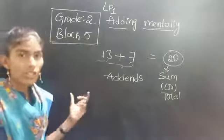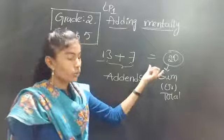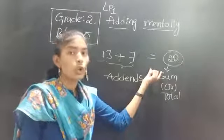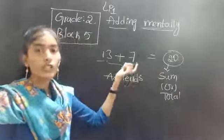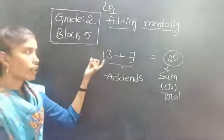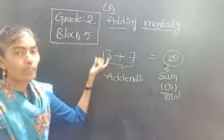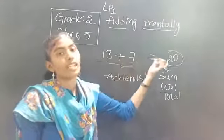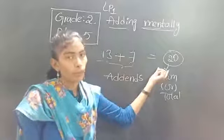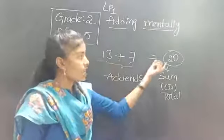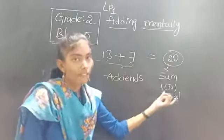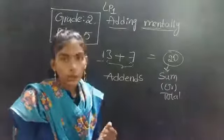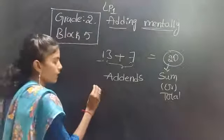So the sum is 20. Did I use any method to find the answer? No — here we just keep the big number in mind, take the small number as fingers, and count up to the answer. The answer you get after adding is called the sum.